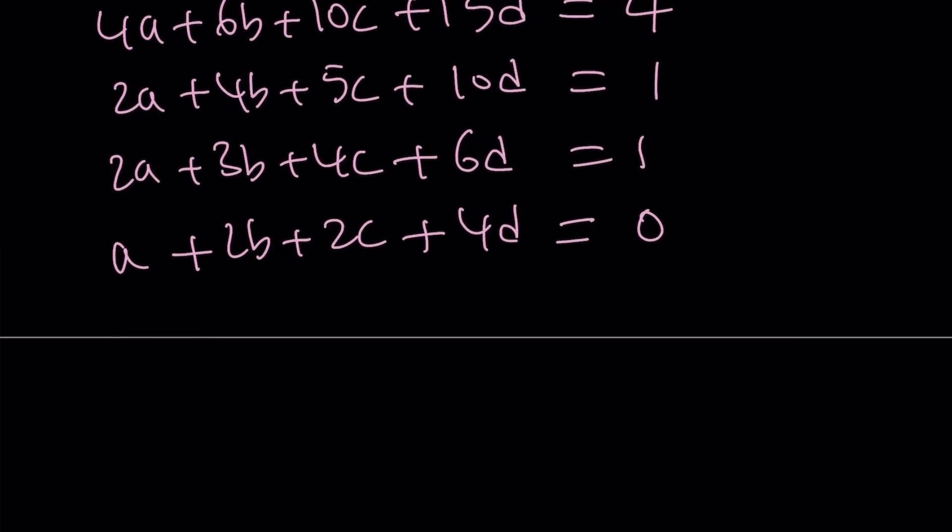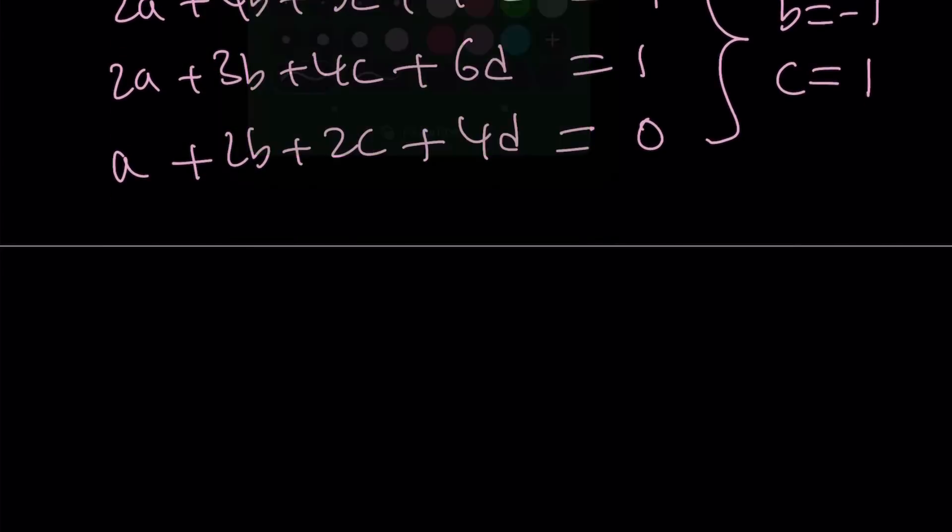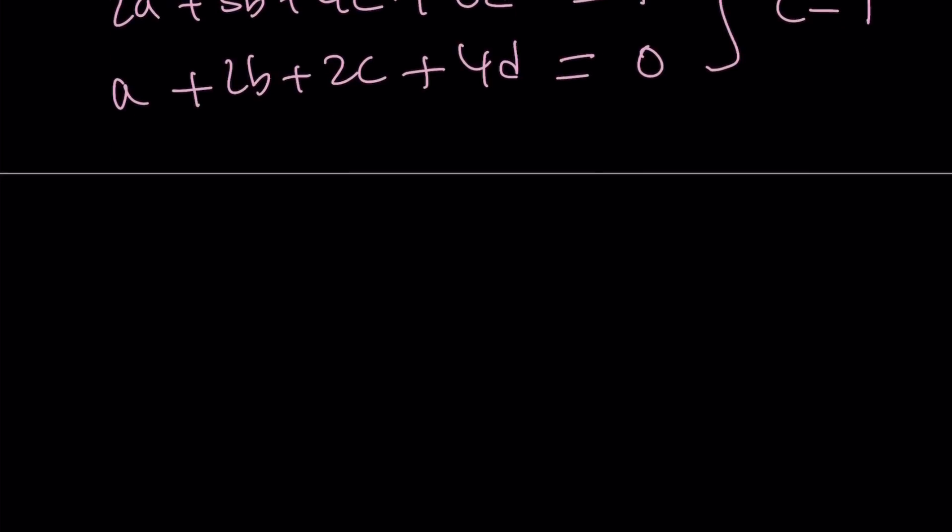All right, so let's solve this system. Again, to keep a long story short, I'm going to give you the solution. From here, you're going to get a equals d equals 0, b equals negative 1, and c equals positive 1. Great. Solving this system is not hard, especially if you use matrices. It's not going to be difficult, or a computer algebra system.